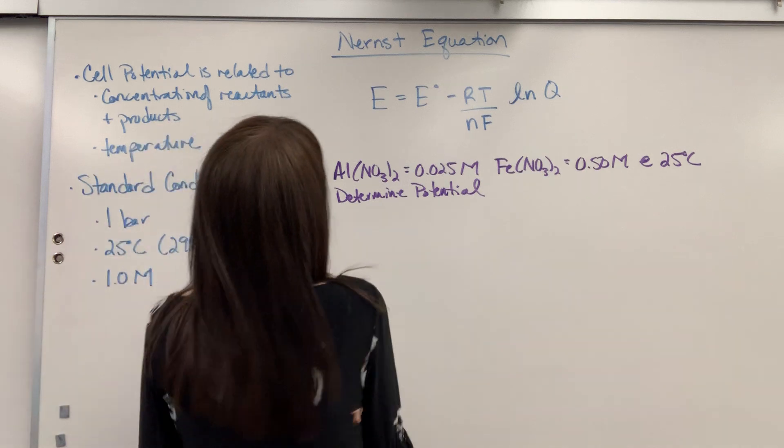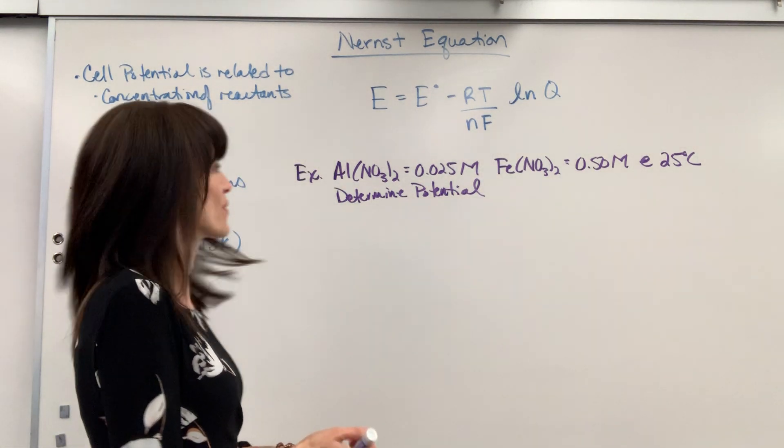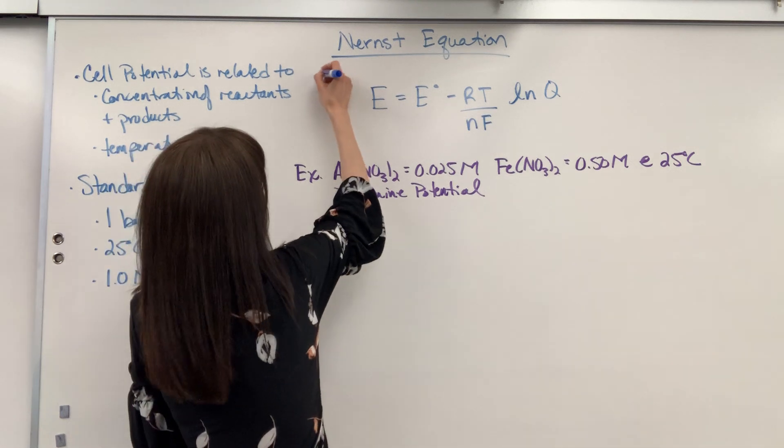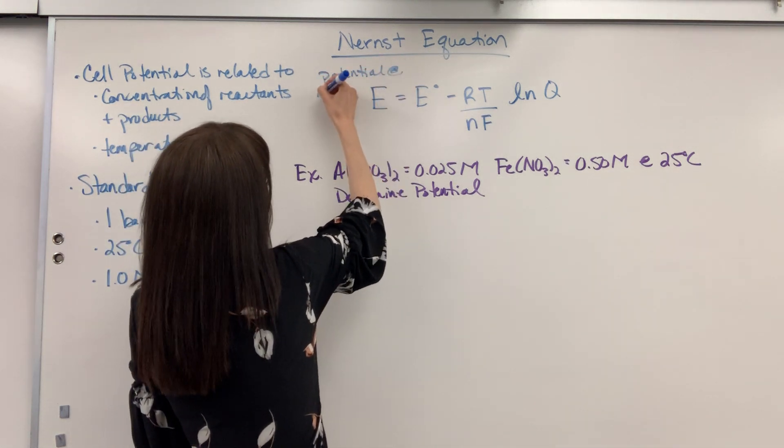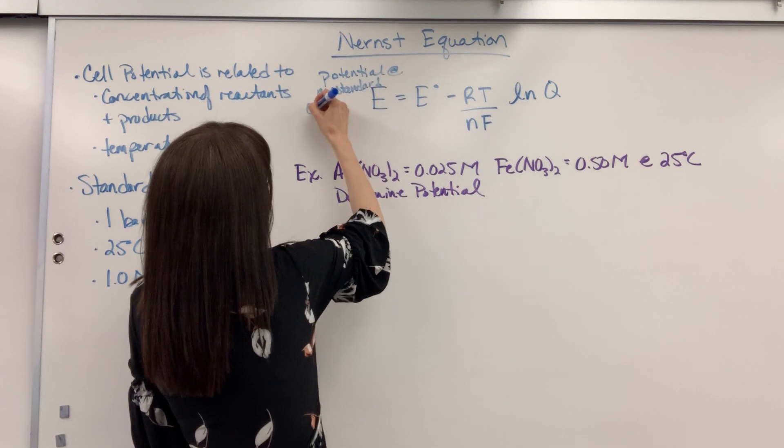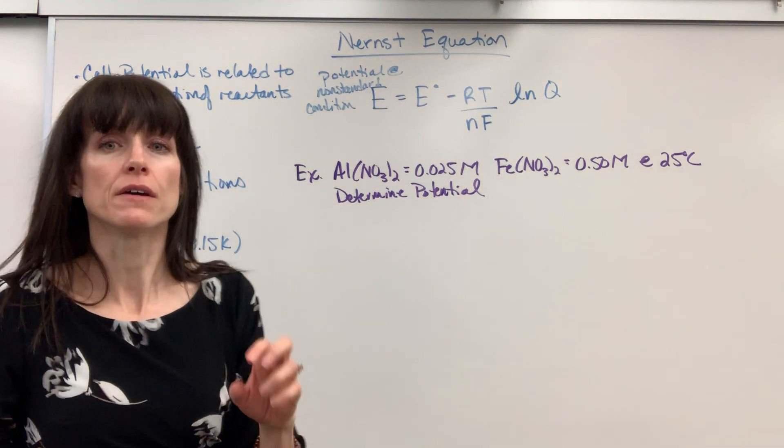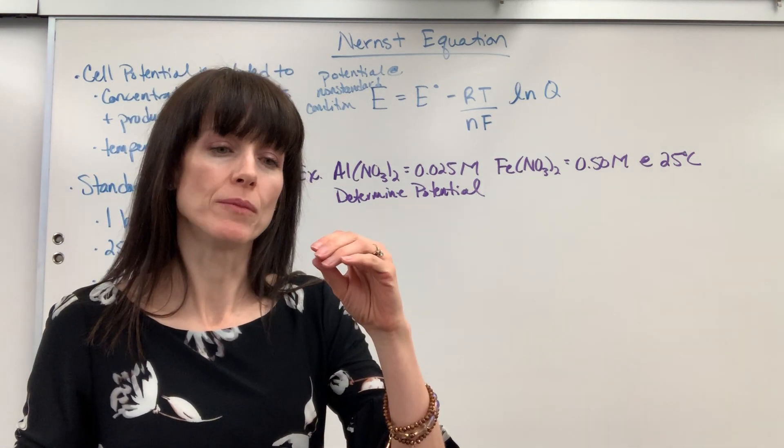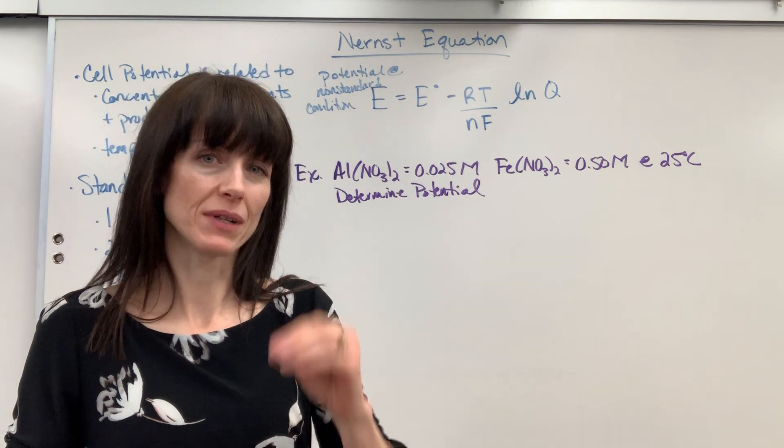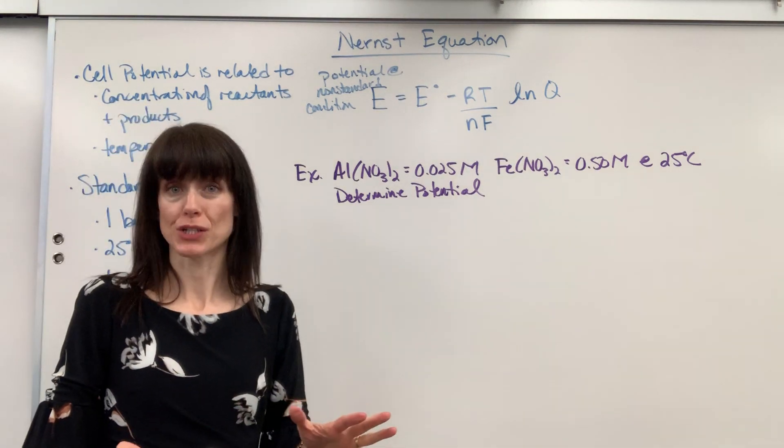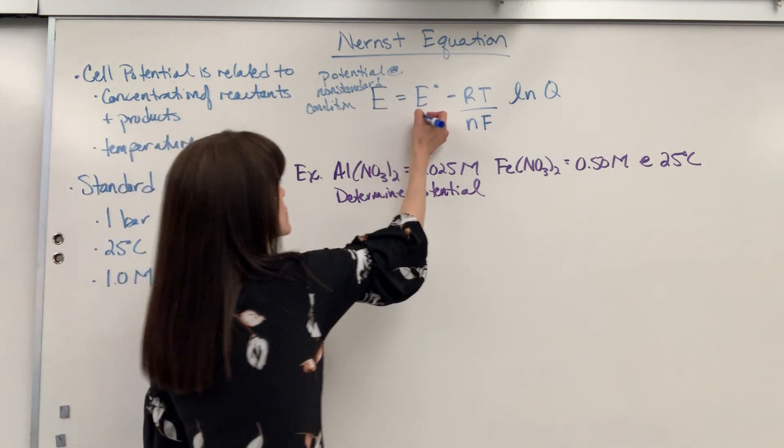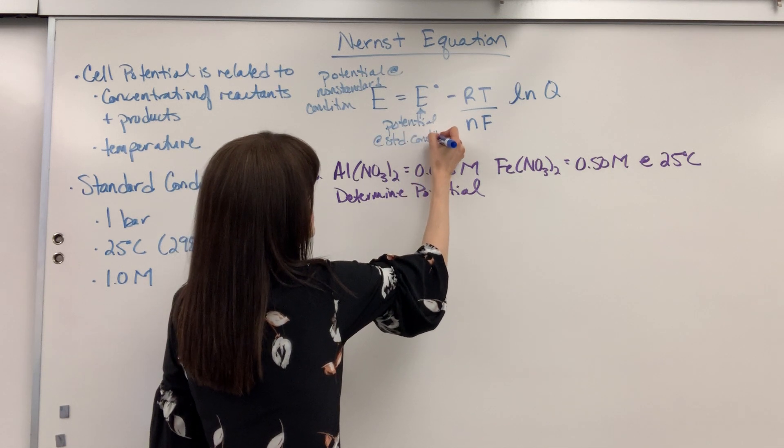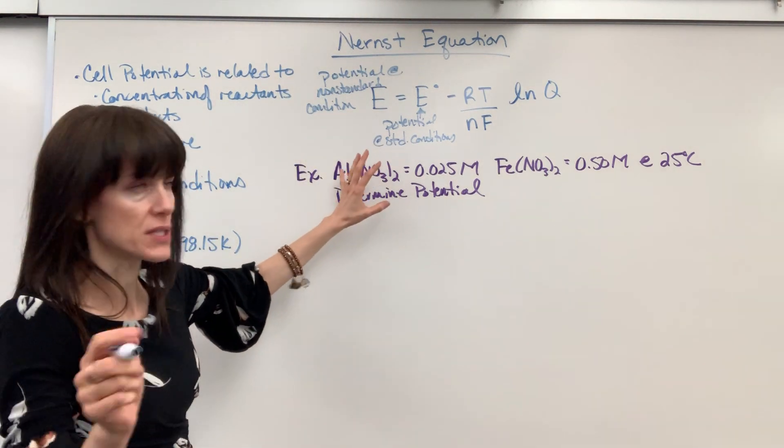Let's look at the Nernst equation. I would like to do some labeling on this for you. Notice this E does not have the naught, so this is going to be potential at non-standard conditions. Now we can predict if the potential decreases or increases based on what our non-standard conditions are. To know how to predict that really fast, watch that video under the redox electrochemistry playlist. But I'm actually going to show you how to use the formula itself. E naught, this is going to be potential at standard conditions. So you need to know how to find that.